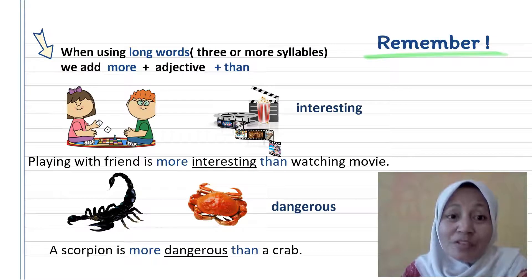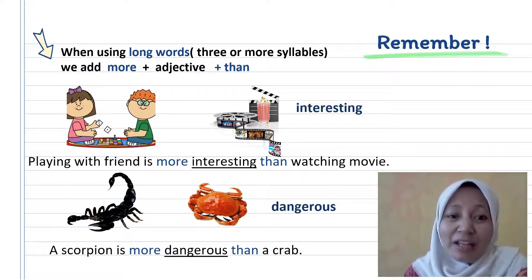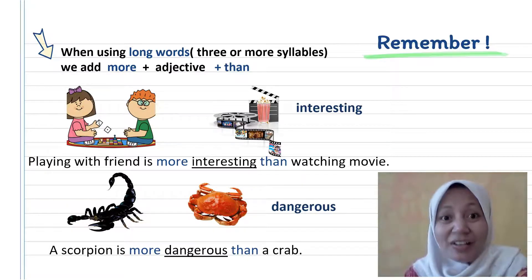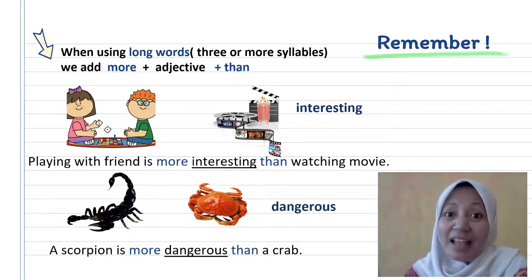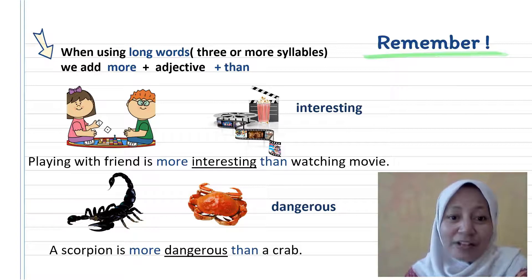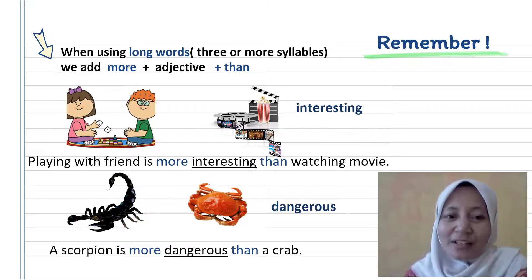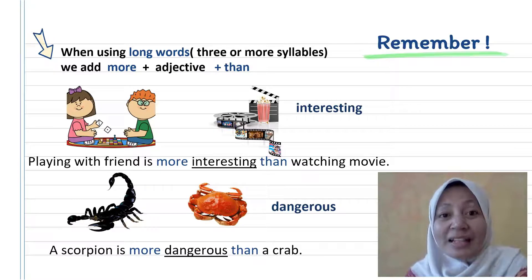When we compare using long words — adjectives with three or more syllables — we add 'more' before the adjective and 'than' after. For example, the word 'interesting' — say and clap — has four syllables. Look at the example: playing with friends versus watching a movie. The sentence is: 'Playing with friends is more interesting than watching a movie.'